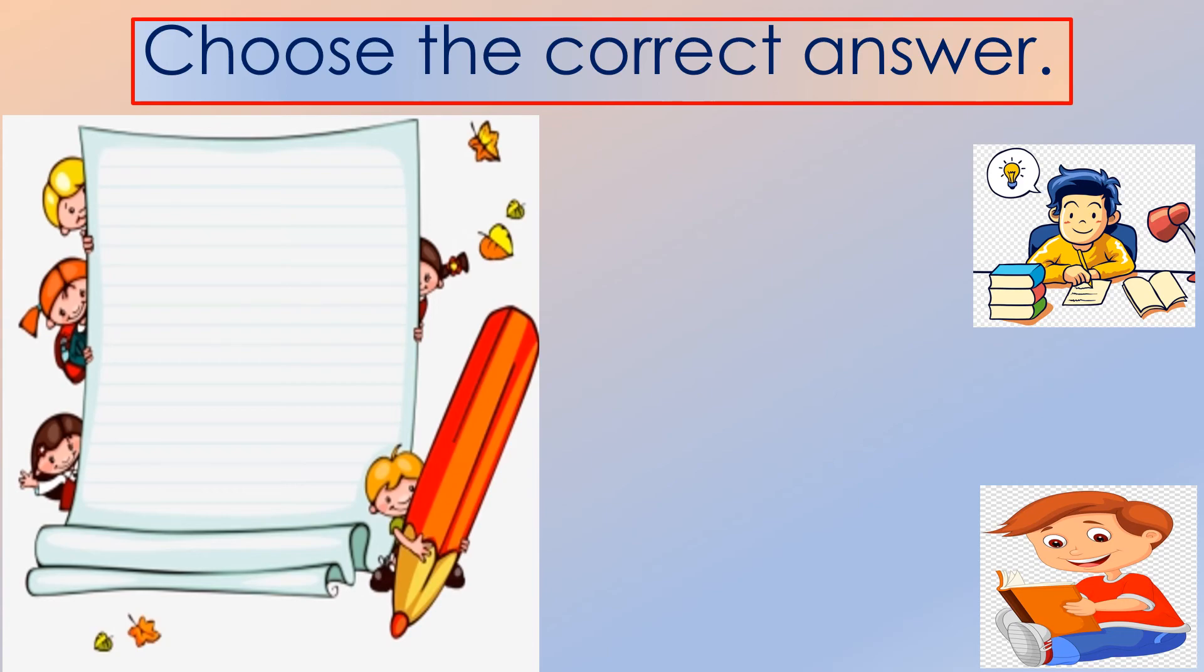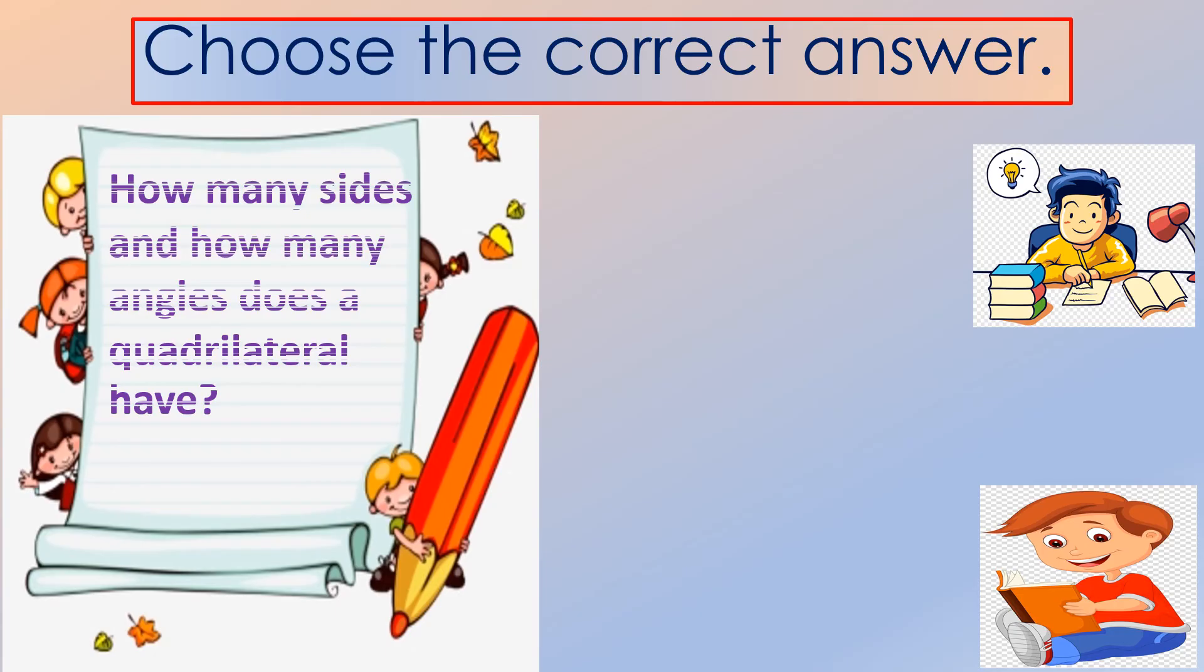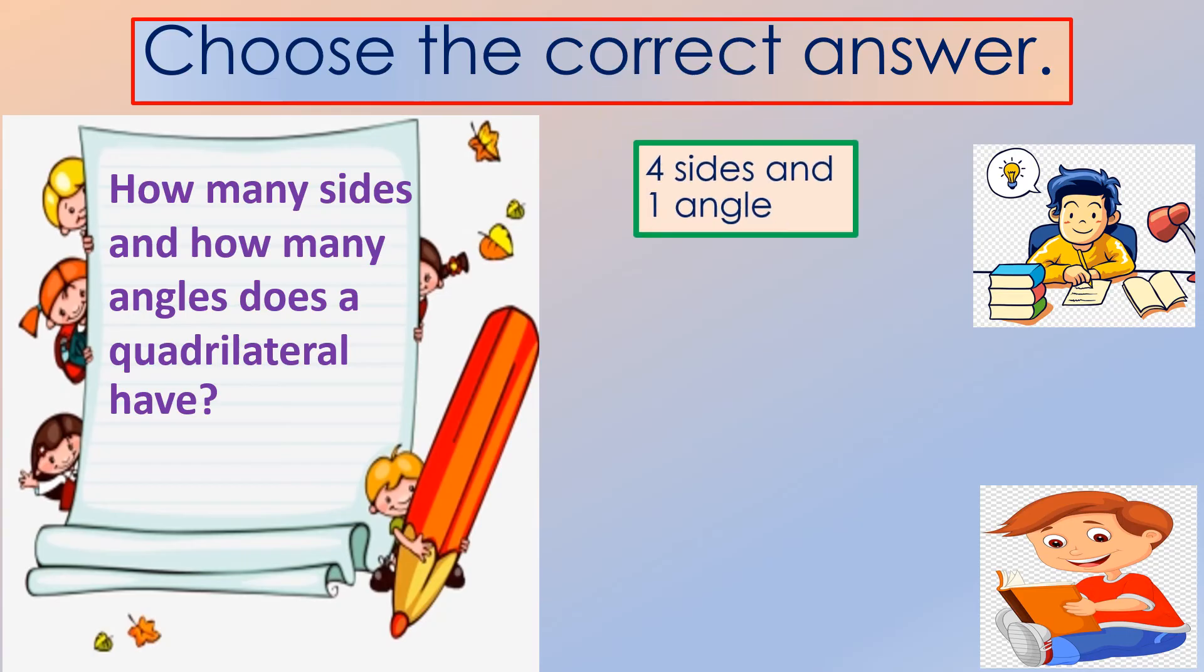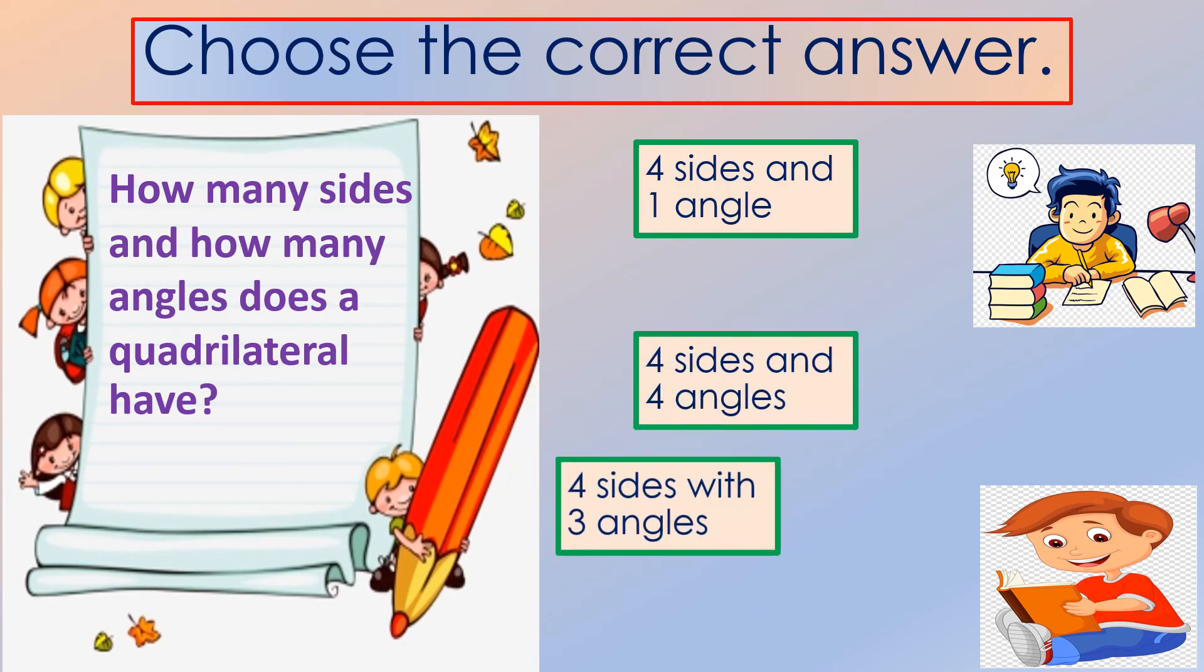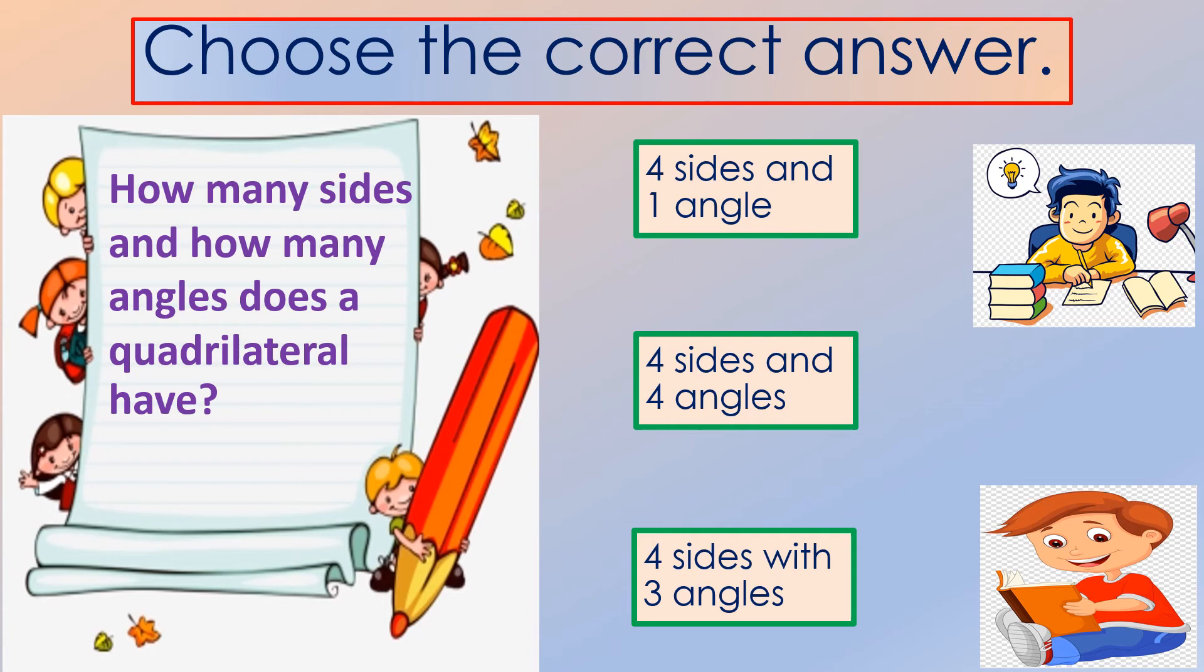Let's take a look at this question. How many sides and how many angles does a quadrilateral have? Is it four sides and one angle? Is it four sides and four angles? Or four sides and three angles? What do you think? The correct answer is four sides and four angles.